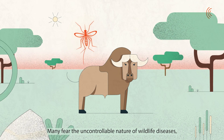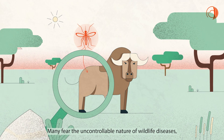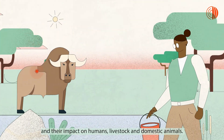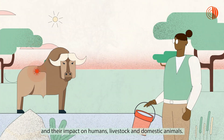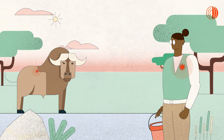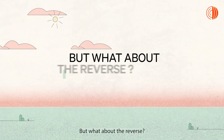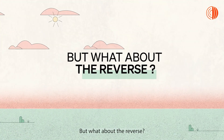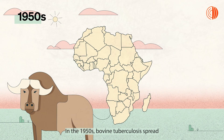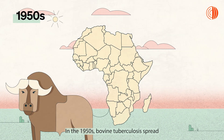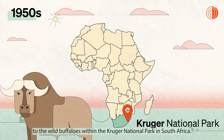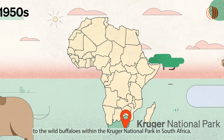Many fear the uncontrollable nature of wildlife diseases and their impact on humans, livestock and domestic animals. But what about the reverse? In the 1950s, bovine tuberculosis spread to the wild buffalos within the Kruger National Park in South Africa.